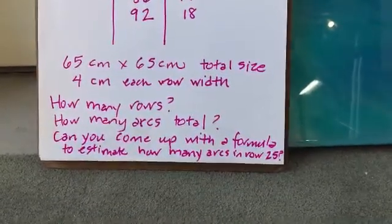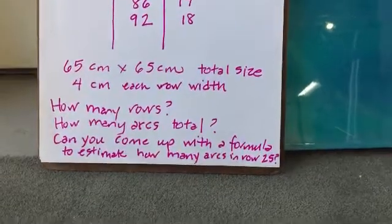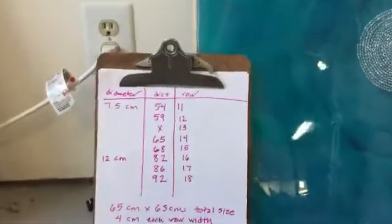And here's a tricky one: can you come up with a formula to estimate how many arcs will be in row 25?